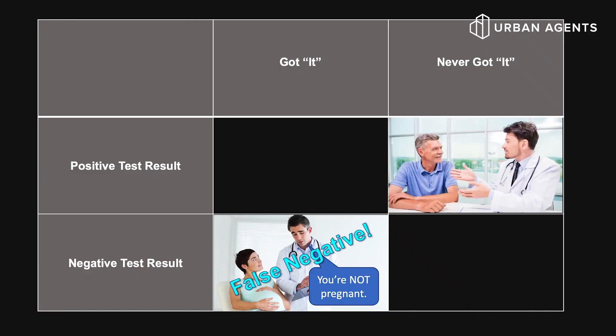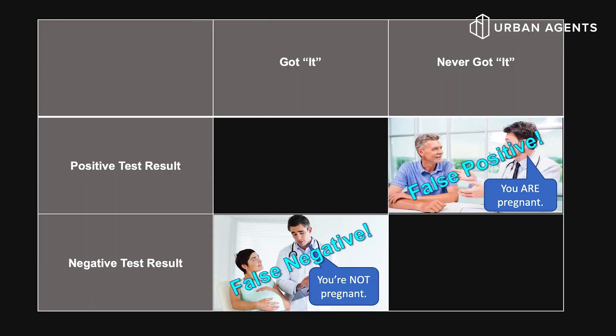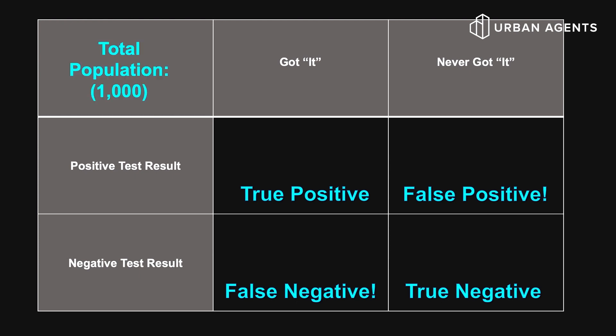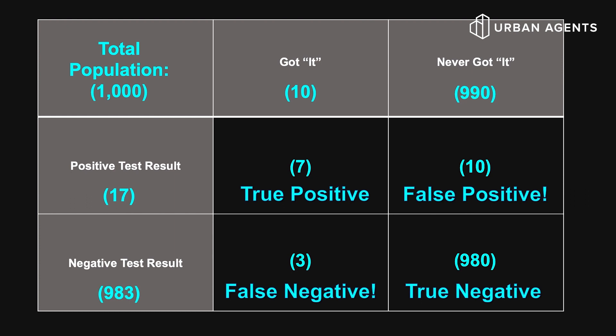Now, how about false positives — meaning the test says you have the virus when you actually don't? For now, it seems that it's much less of an issue, although you can imagine this may start to really matter if you ramp up testing in a huge way. Some people say, why don't we just test the whole population? The issue is because of this false positive rate — even though it's very, very low, because of the sheer number of people without the virus, the false positives will still end up being a pretty significant number. In that case, we will worry ourselves needlessly and even worse, overstress our public health system.